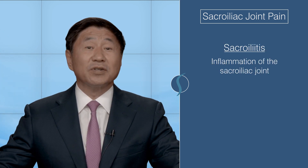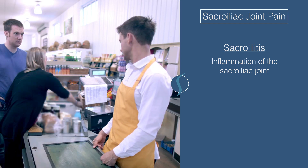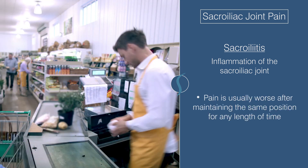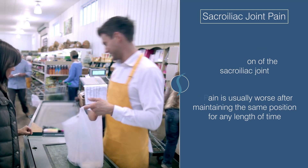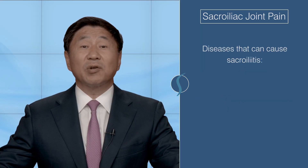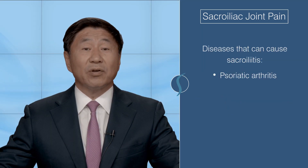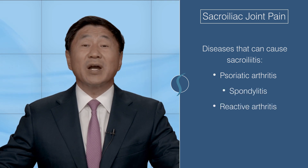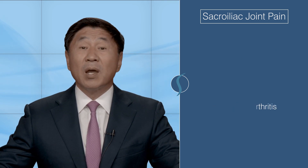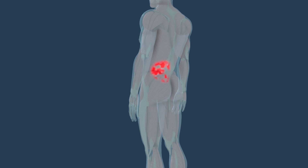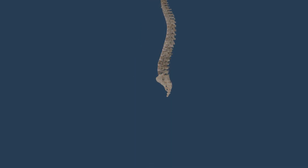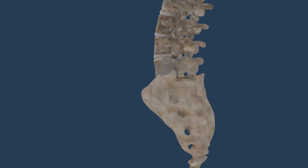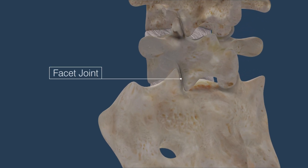Inflammation of this joint is called sacroiliitis. Pain is usually worse after maintaining the same position for any length of time. Diseases that can cause sacroiliitis are psoriatic arthritis, spondylitis, and reactive arthritis. Most people with sacroiliitis present with low back pain, usually worse on one side than the other, which often radiates into the buttock or upper leg on the affected side.